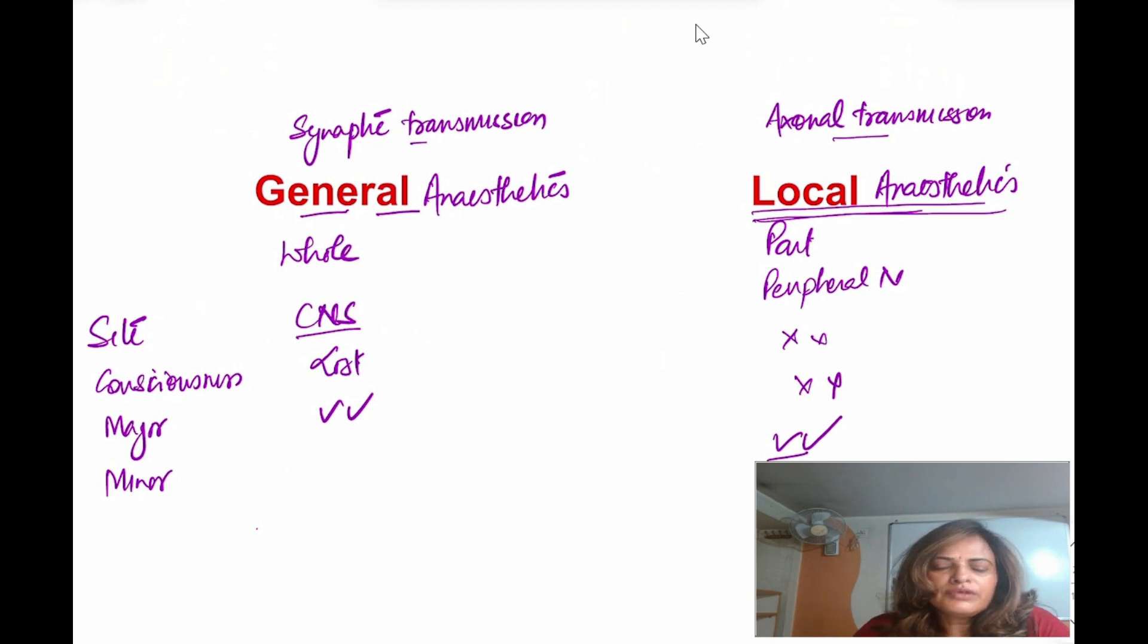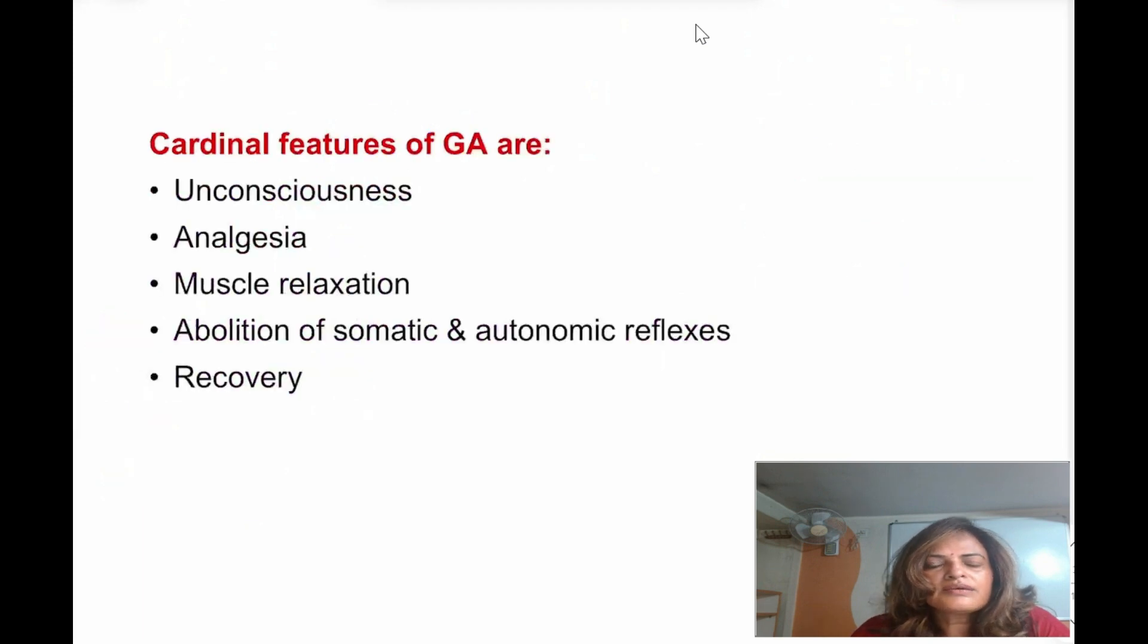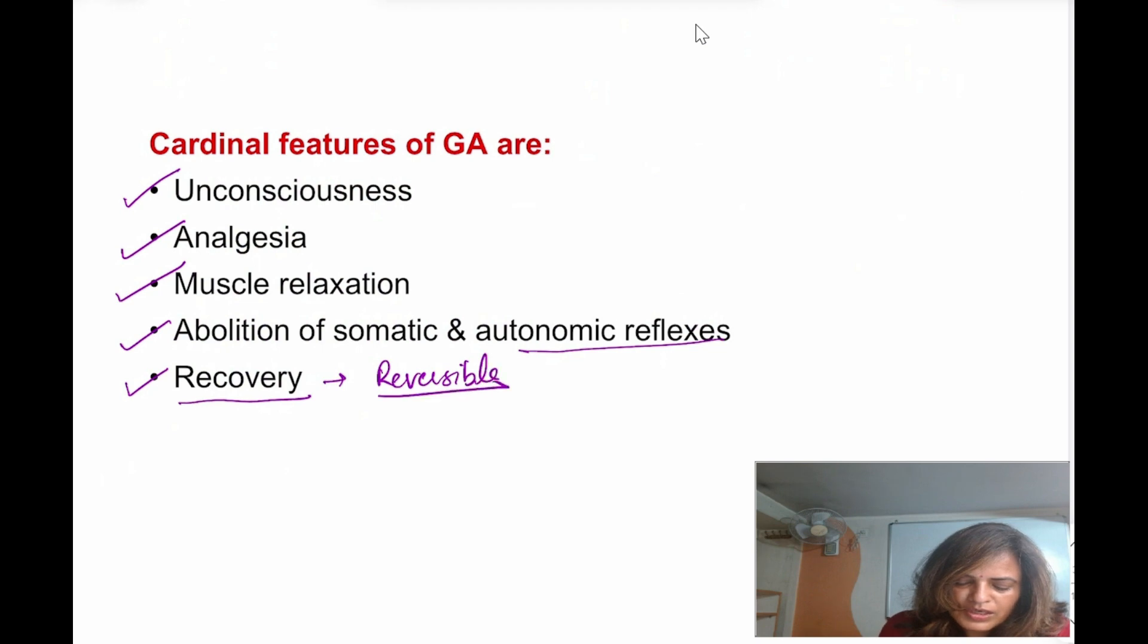Now, what are the cardinal features of the general anesthetic? The most important cardinal feature is unconsciousness, which I have already told. Consciousness is lost when you are giving a general anesthetic. Another important is analgesic effect. Then muscle relaxation will be there. Reflexes will be lost, both somatic and autonomic. And recovery is there. That is why it is called reversible. It is the reversible loss of responses to the noxious stimuli.